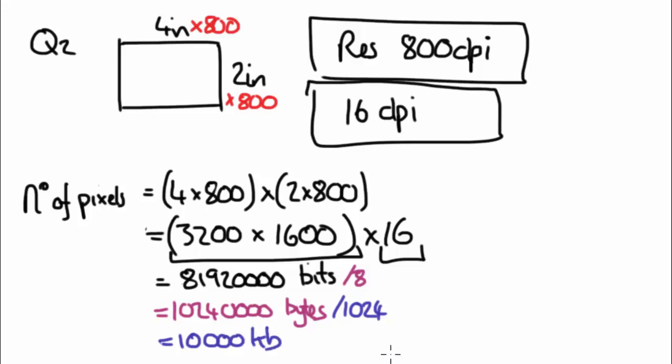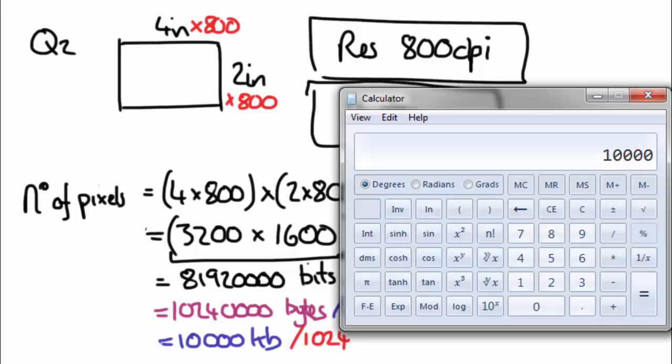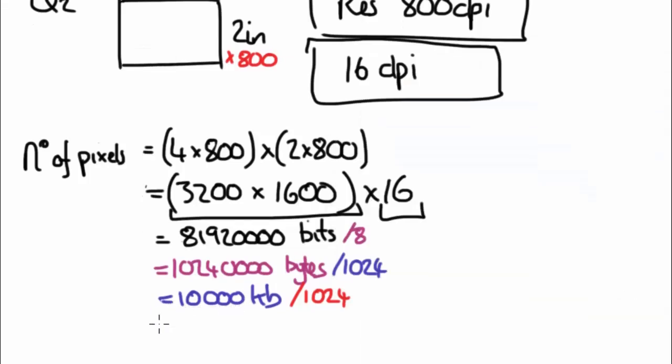This one is going to take a bit longer and we divide that by 1024 as well. And 9.77, we'll just say. So that equals 9.77, and that is in megabytes.